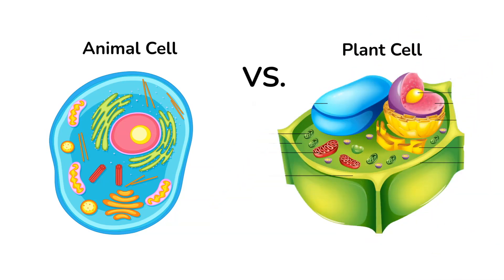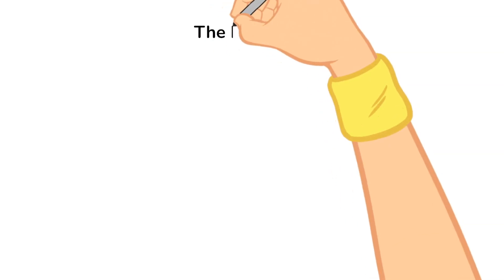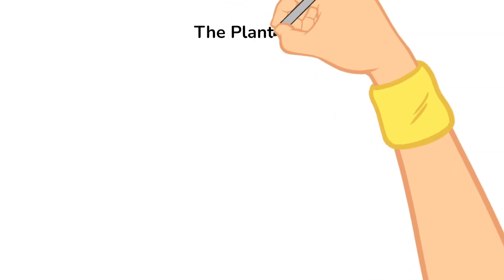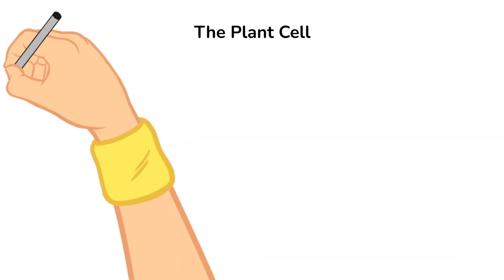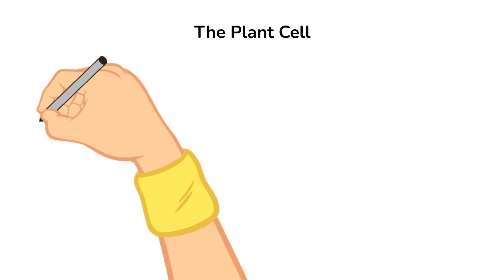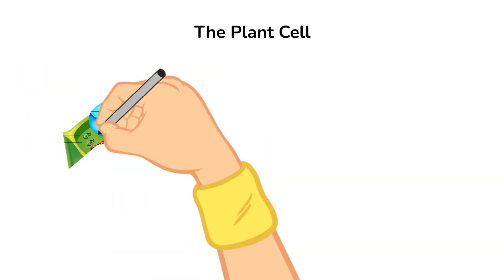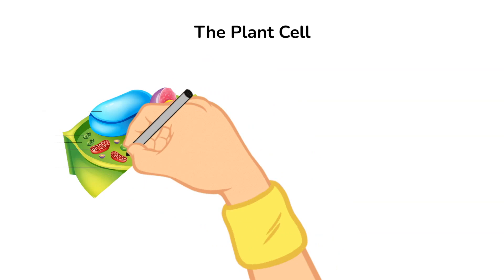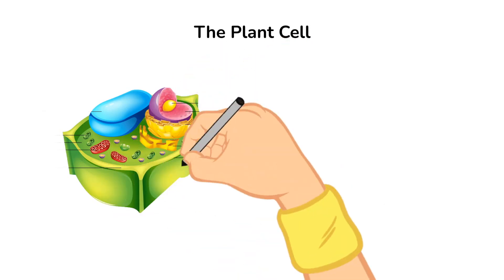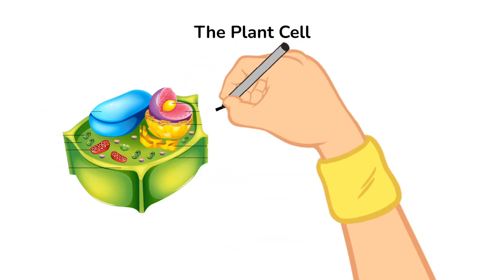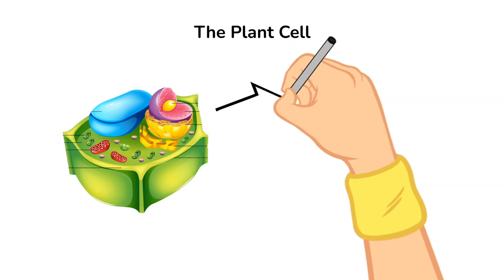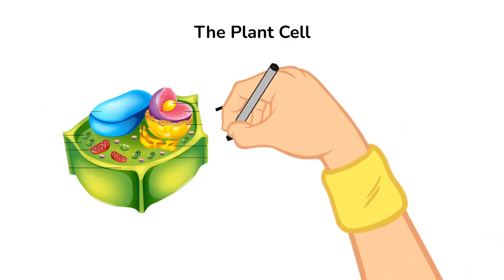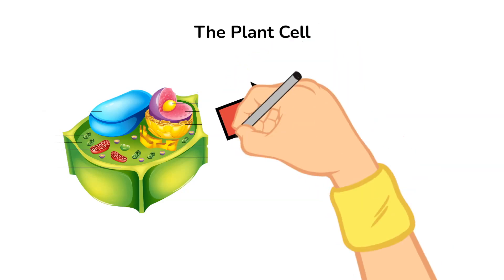And so today, I want to focus on the parts that are different from an animal cell. So remember that some of the parts are the same, and we've already talked about that when we talked about the animal cell. In this video, I'm going to only talk about the parts that are different in a plant cell. So let's go ahead and jump into it.